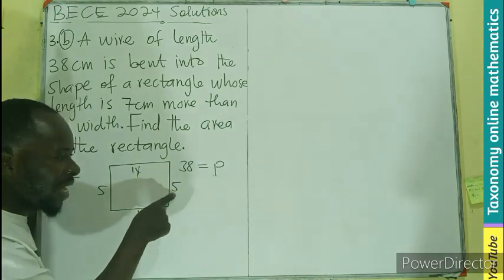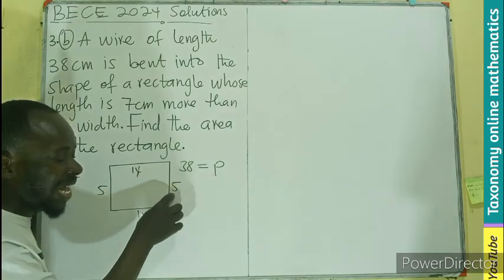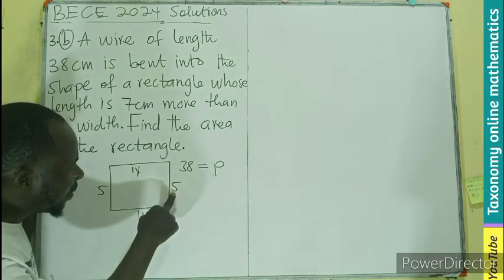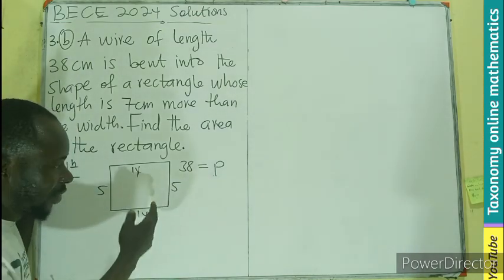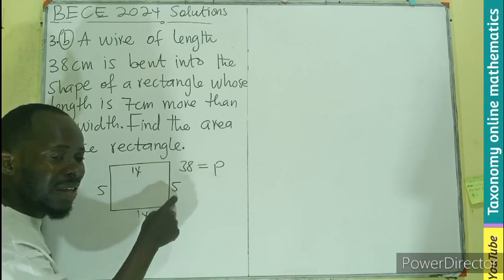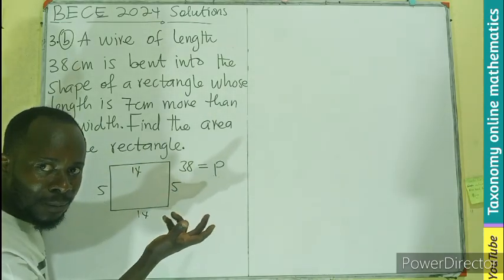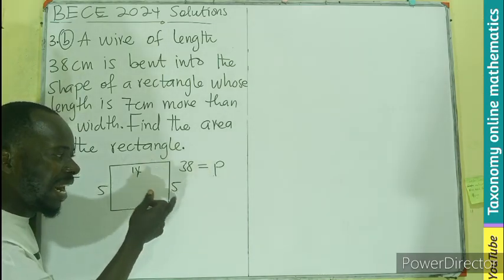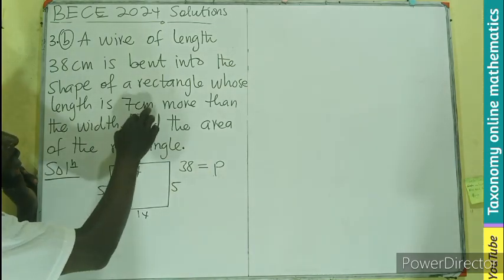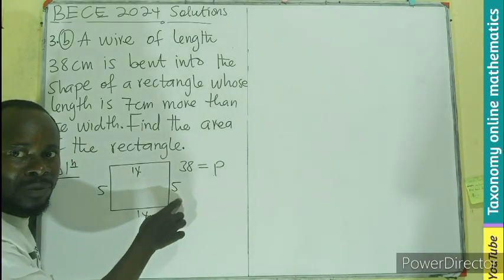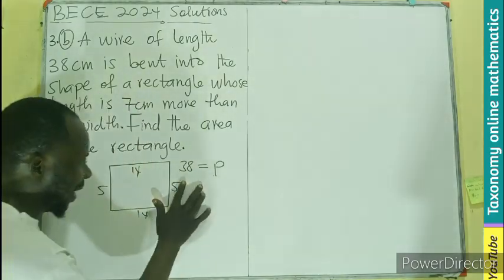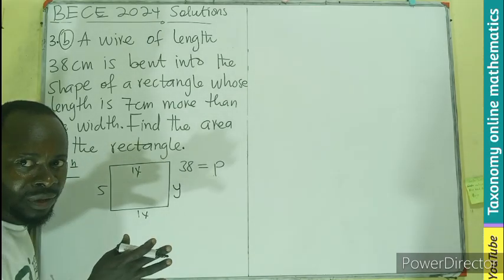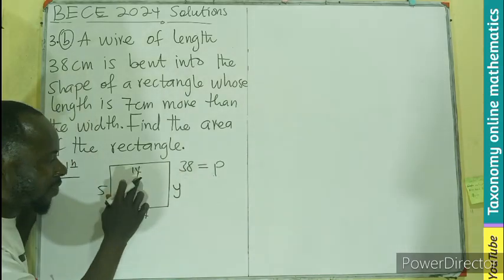Now you can see that this is 5 plus a certain number. If I add 9, which means I will be saying that the length is 9 more than the width. But the arrangement here, the length is rather 7 more, 7 centimeters more than the width.